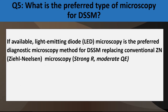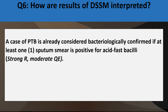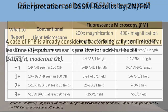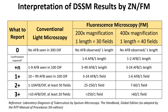If available, light-emitting diode microscopy is the preferred diagnostic microscopy method for DSSM, replacing conventional Ziehl-Neelsen. A case of PTB is considered confirmed if at least one sputum smear is positive for acid-fast bacilli. Smear results are interpreted by Ziehl-Neelsen or fluorescence microscopy as 0, plus N, 1+, 2+, or 3+, with the corresponding AFB count during microscopy.